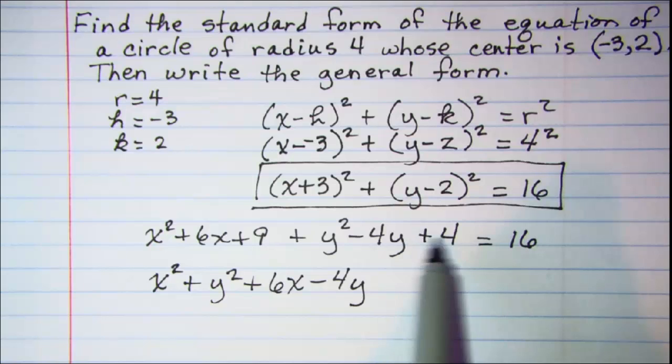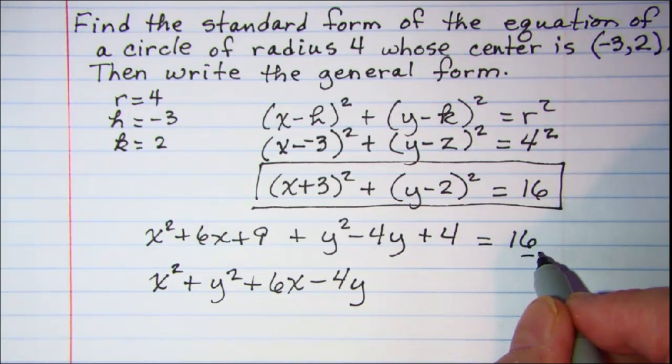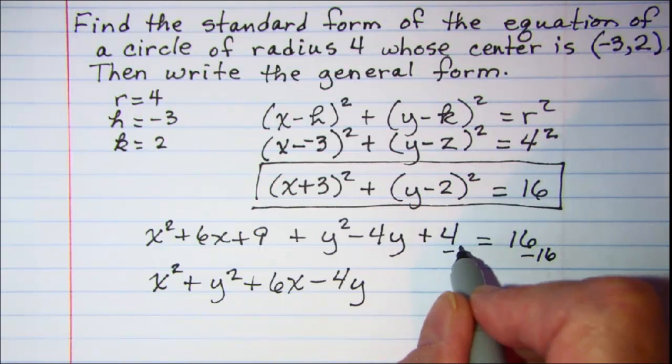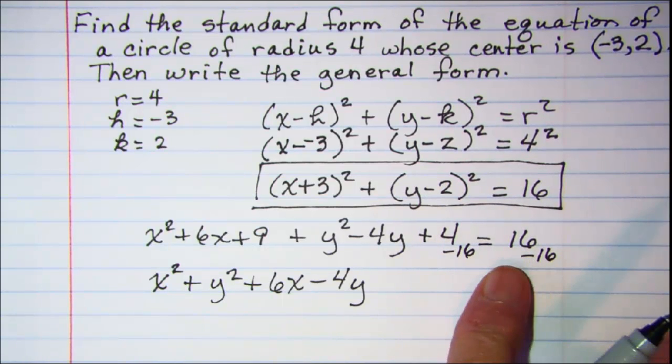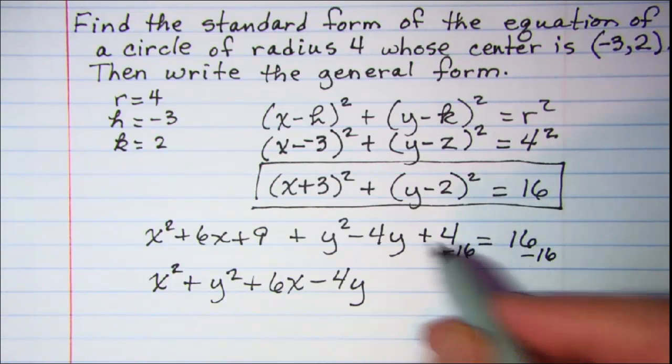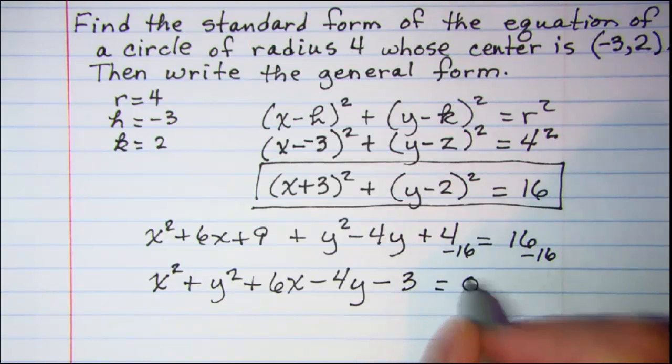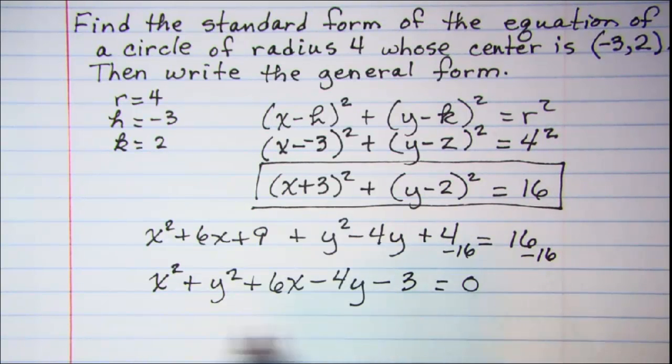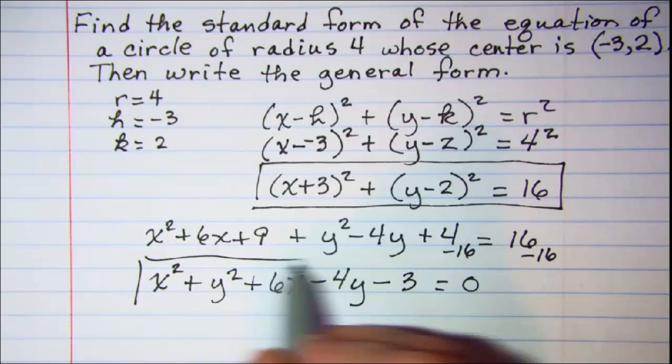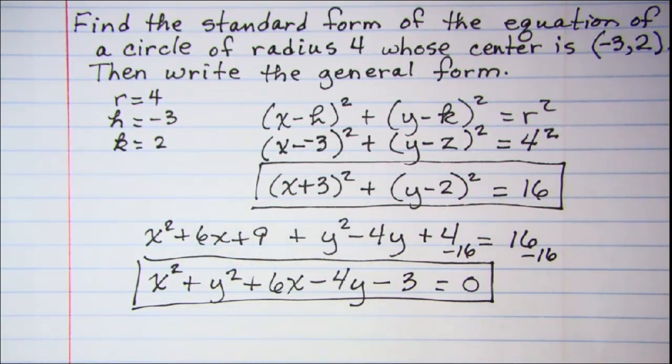Now we have 9 plus 4 is 13, and then we need to subtract the 16 from both sides so that that's brought over to the left. So we have 13 minus 16 which will give us a -3, and then we have a 0 on the right side. So this is our general form of our equation of the circle.